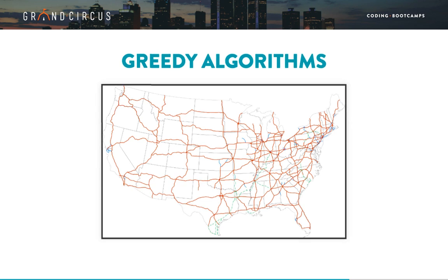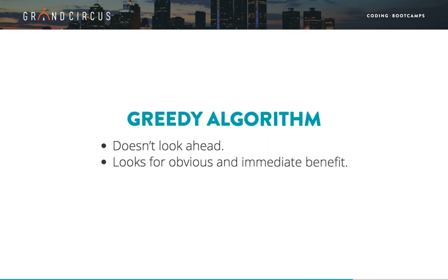Let's look at greedy algorithms first. Greedy algorithms propose a simple solution to a complex problem — in fact, sometimes too simple. Imagine we're writing an algorithm to find GPS directions. There are millions of different routes to get from Detroit to LA — that's a complex problem. But there's a simple solution: we know LA is west of Detroit, so just turn west at every intersection. That would be an example of a greedy algorithm, which is any algorithm that doesn't look ahead or take complex factors into account. It just looks at the current situation and makes a choice with the most obvious and immediate benefit.